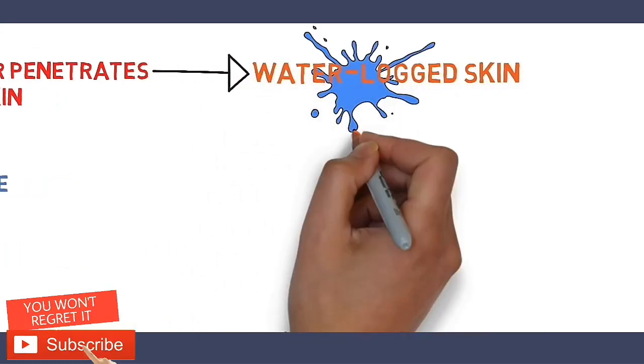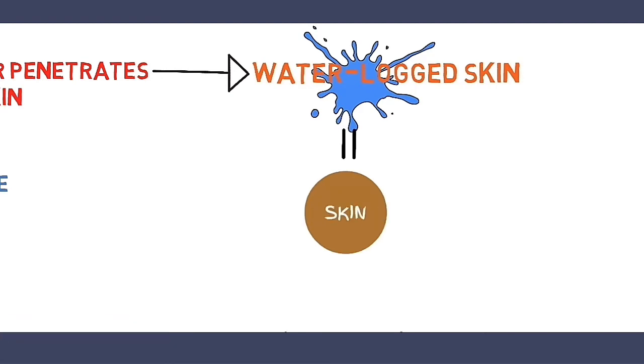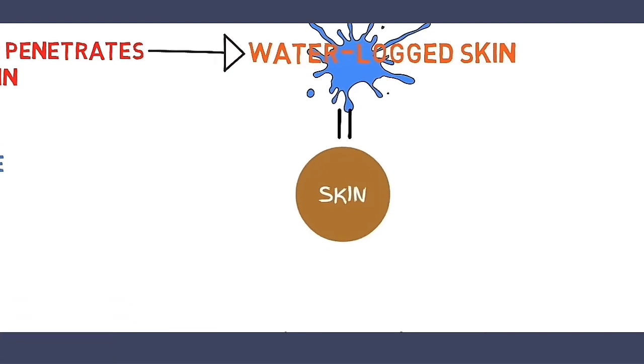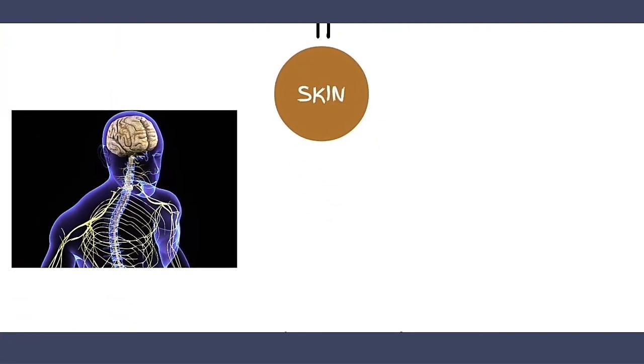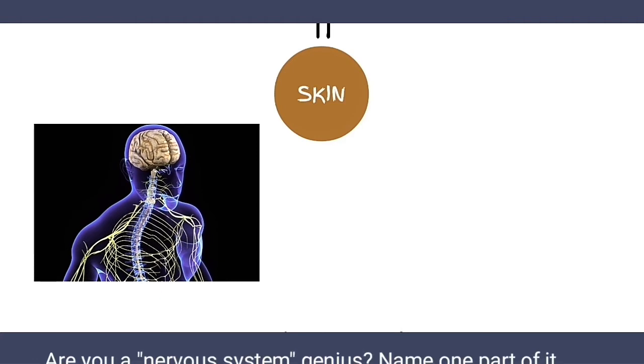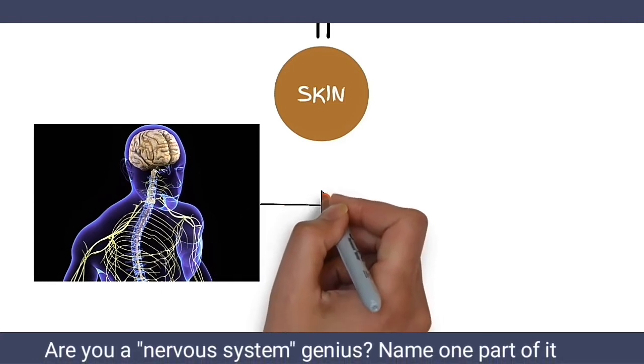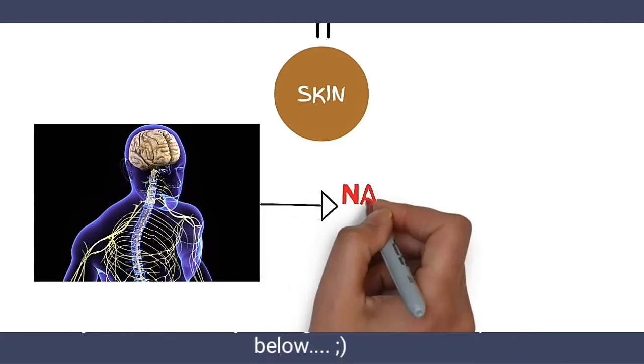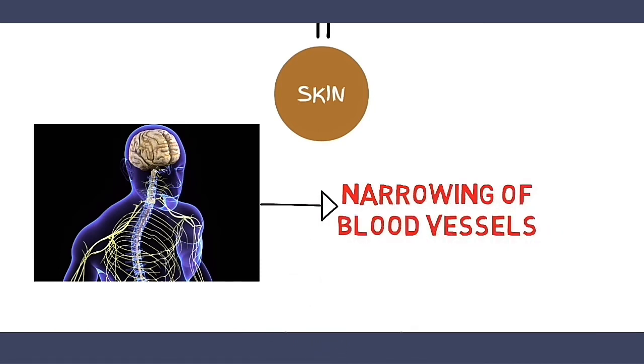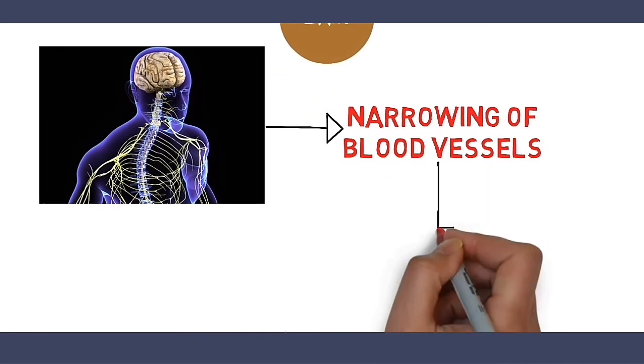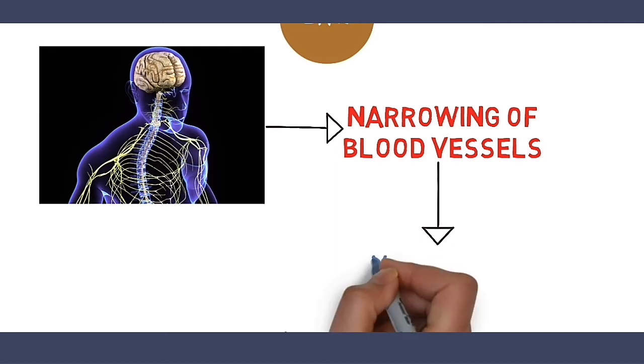The surface area of our skin increases. In order to compensate for this increase in surface area, our nervous system causes the blood vessels beneath our skin to narrow. This narrowing of blood vessels leads to the wrinkles that we all know.